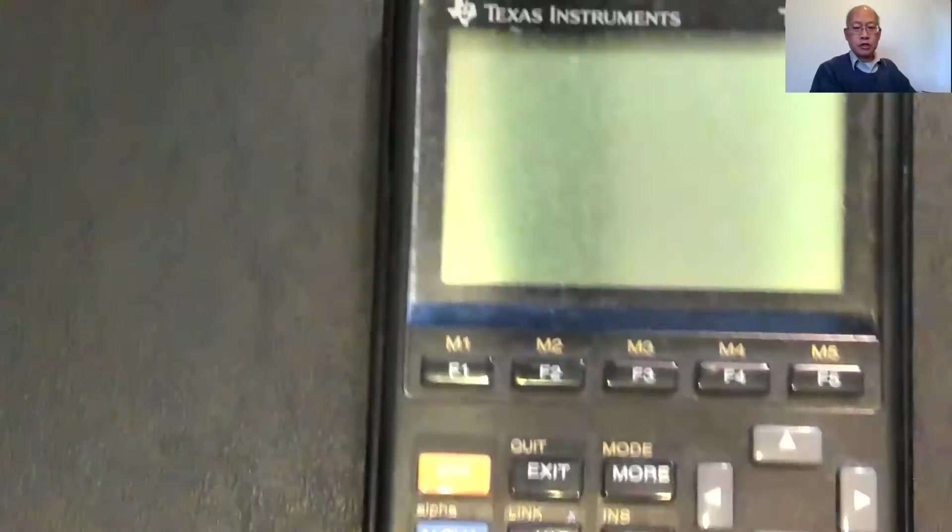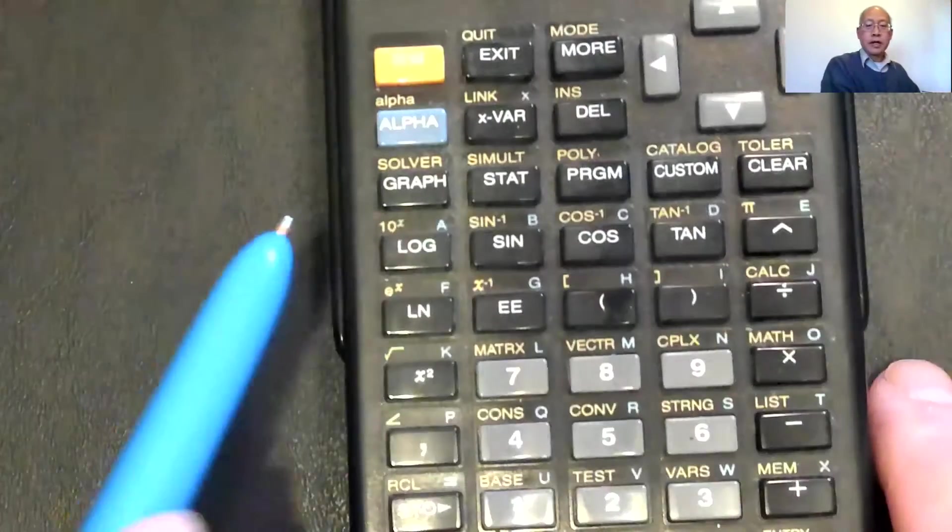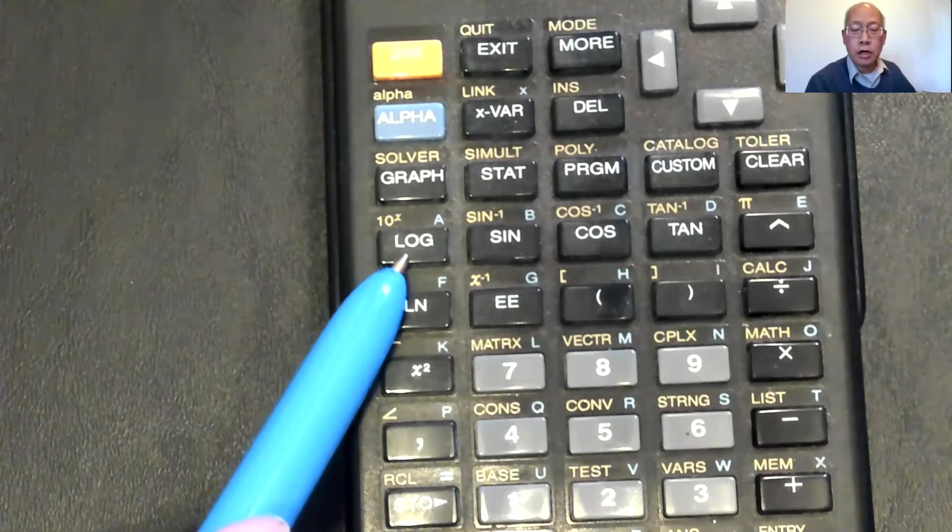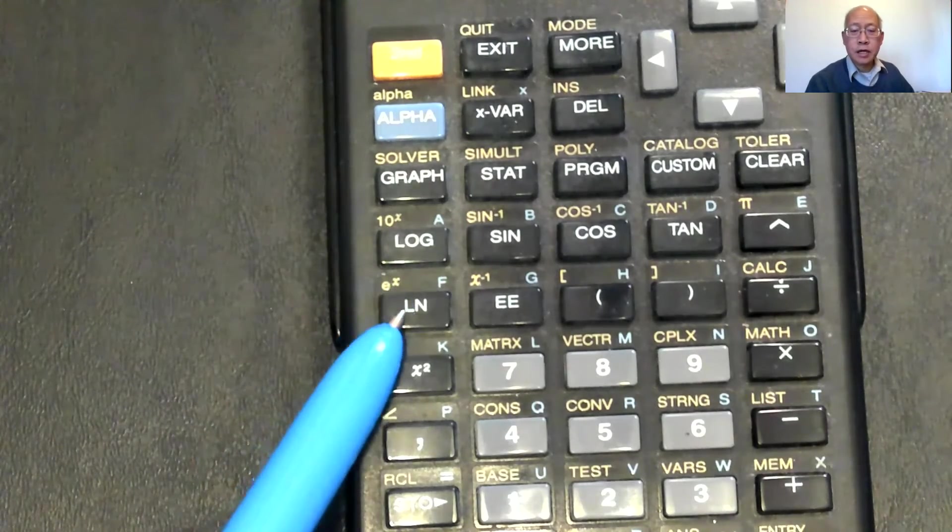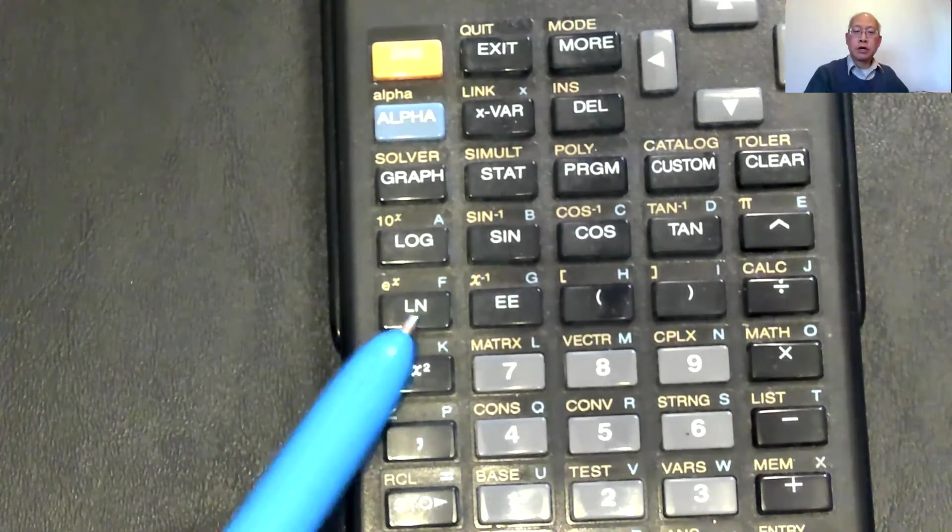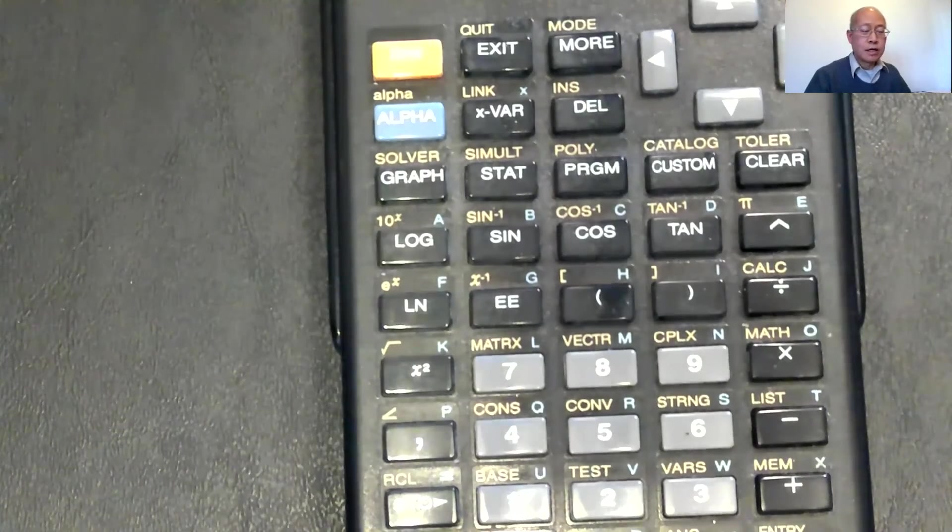Okay, all right, so on your calculator, I'm going to look for the e to the x function. It is normally above the natural log function, so here's log, we'll get to log, and that means base 10, here's 10 to the x, here's ln, which stands for natural log, and e to the x.